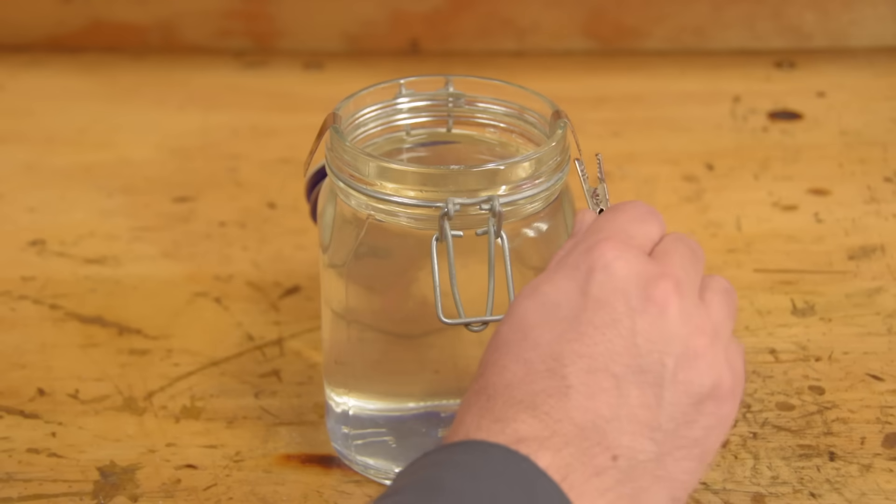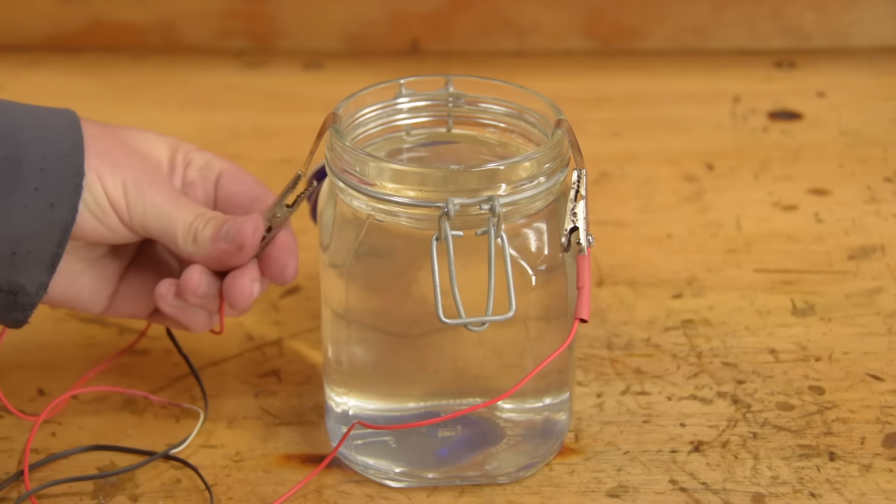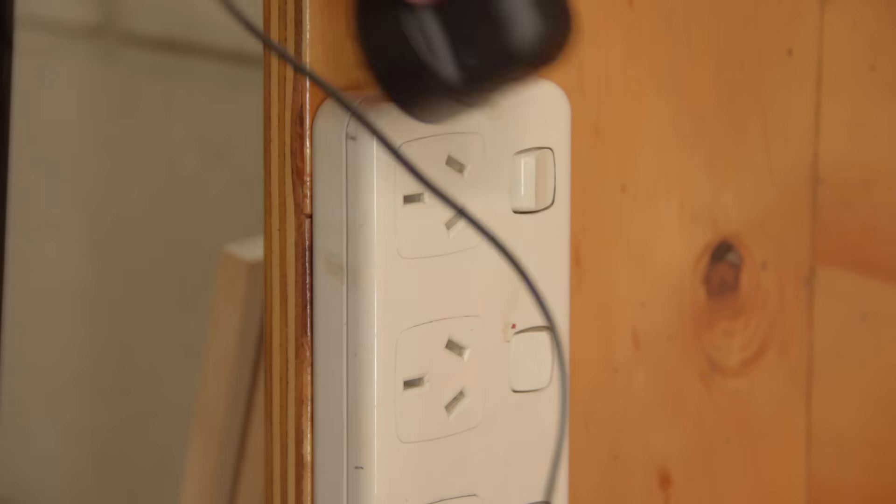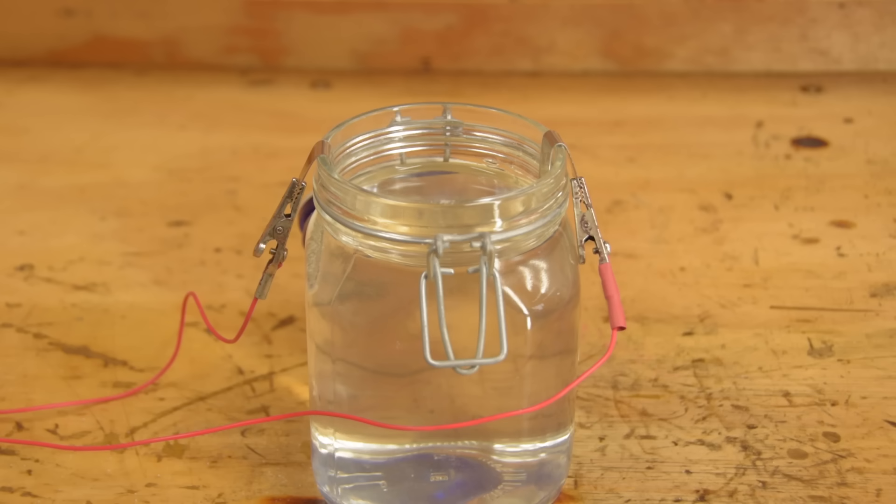Connect the power supply to each piece of nickel. Positive to one piece, negative to the other. That's it. Now you're making nickel electrolyte. It's really that easy.